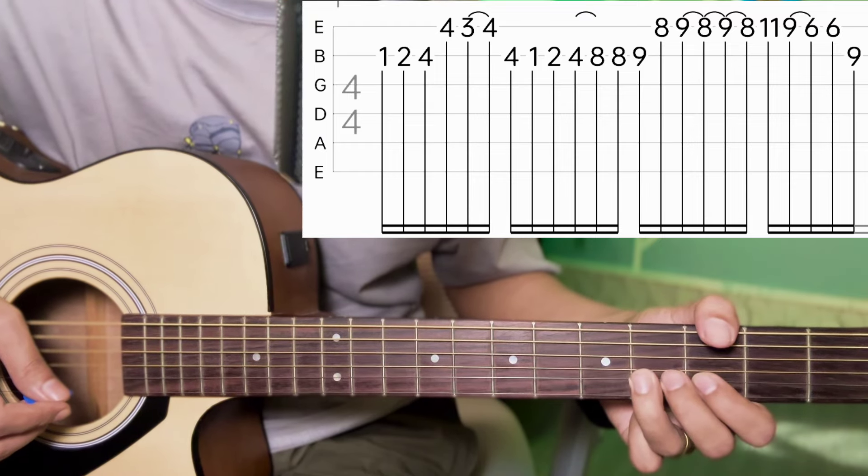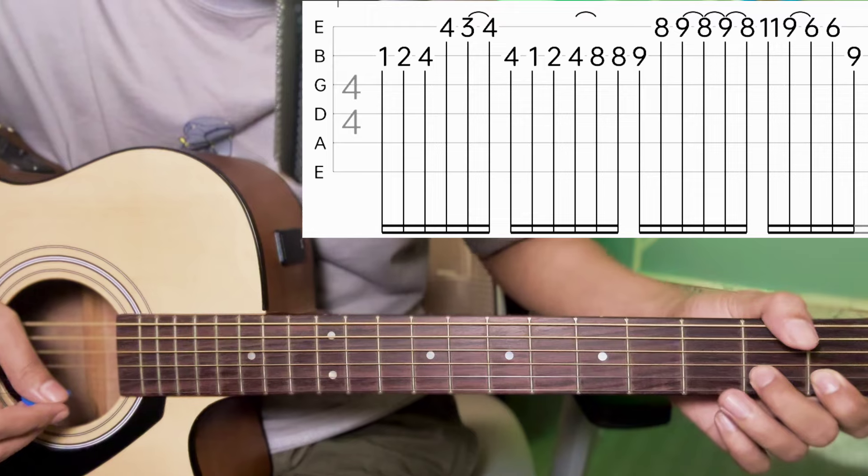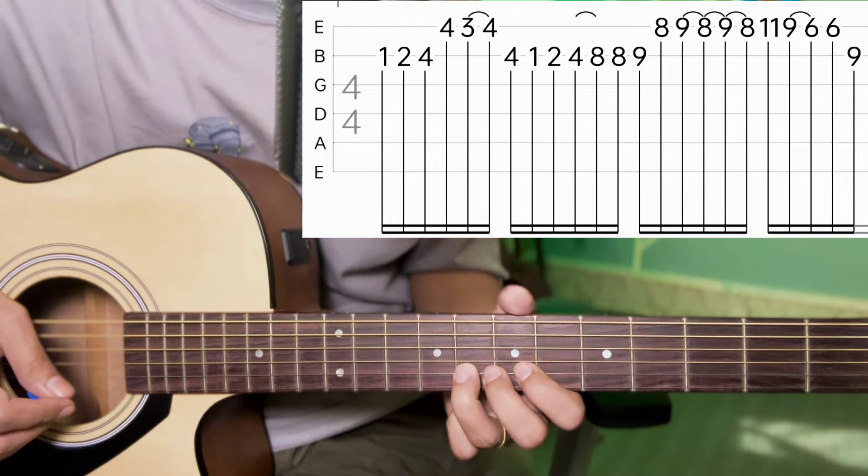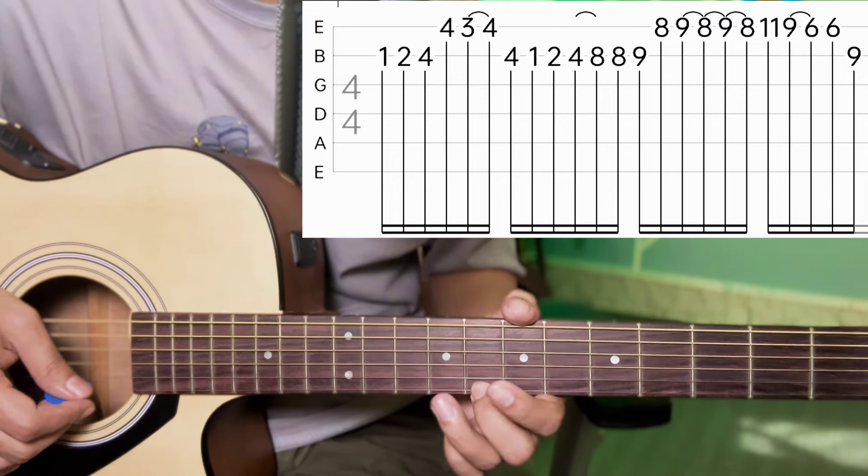Repeat. Second string: one, two, four. Four, eight, nine, eight, eight, nine, eight, two. Pull-off.